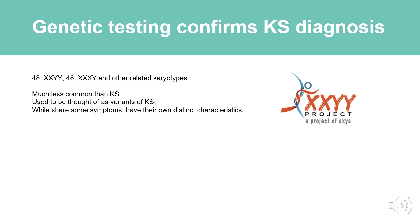48,XXXY and other related karyotypes are other variations of Klinefelter syndrome. They are much less common than classic KS and used to be considered variants of KS, although some physician scientists try to categorize them separately. While they share some symptoms with classic Klinefelter syndrome, they have their own distinct characteristics and are much rarer than Klinefelter syndrome.